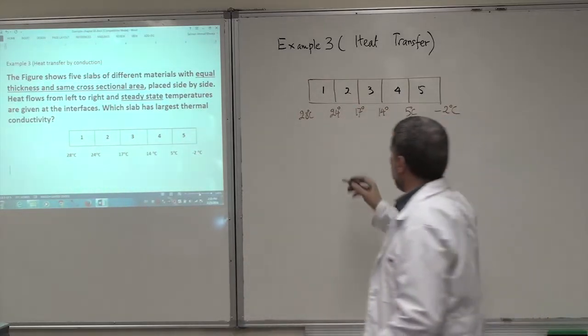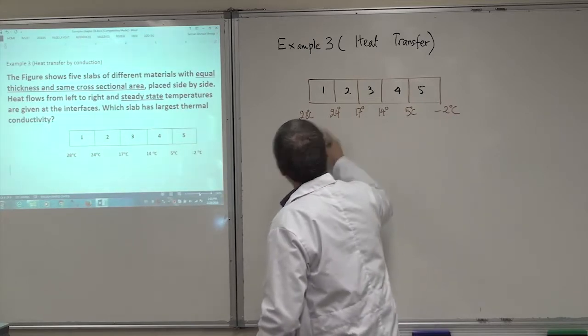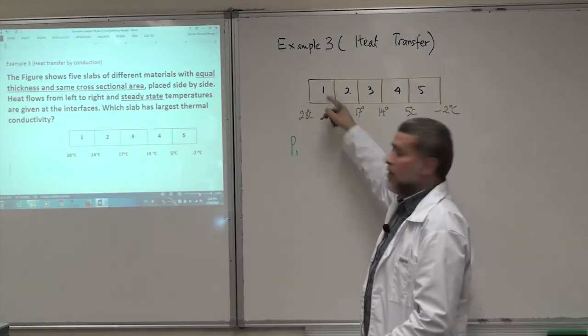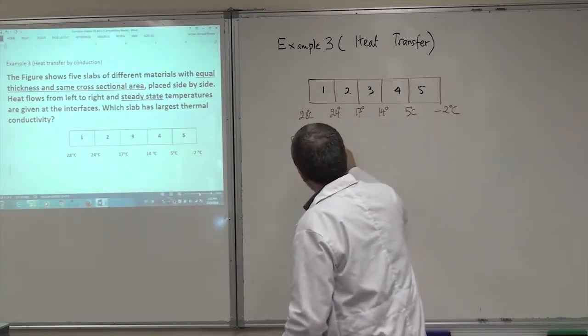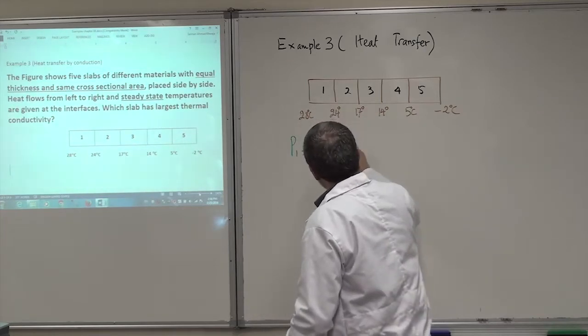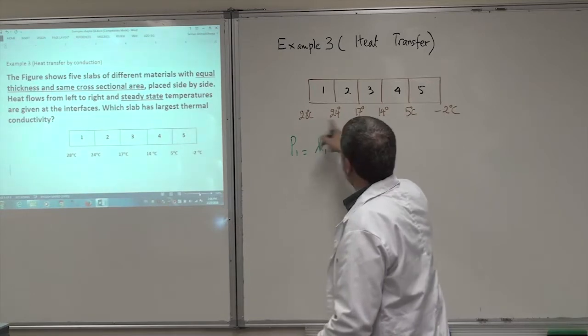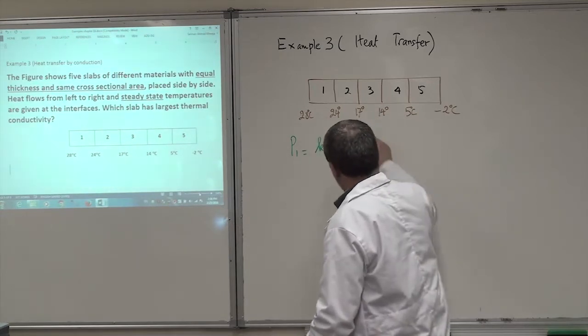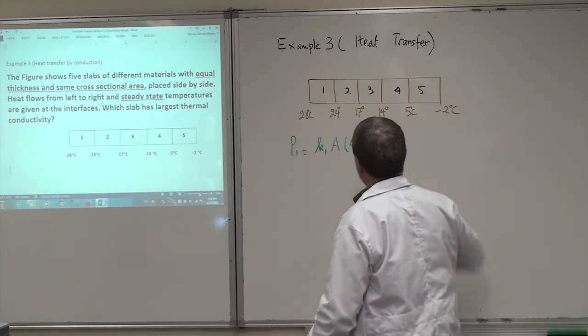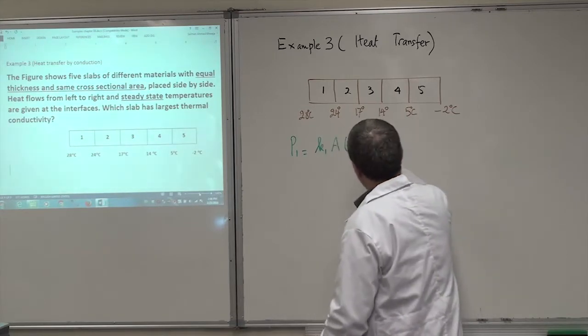So let's write P, P1, P1 will be for this guy here. That's K1. Cross-section area, then delta T, 4. You agree? 4, 4 C degree, by the way.